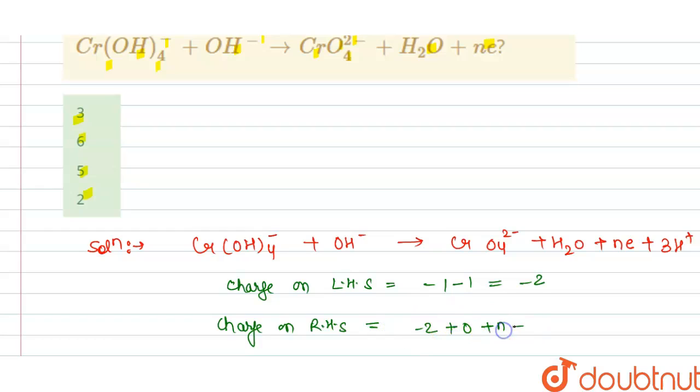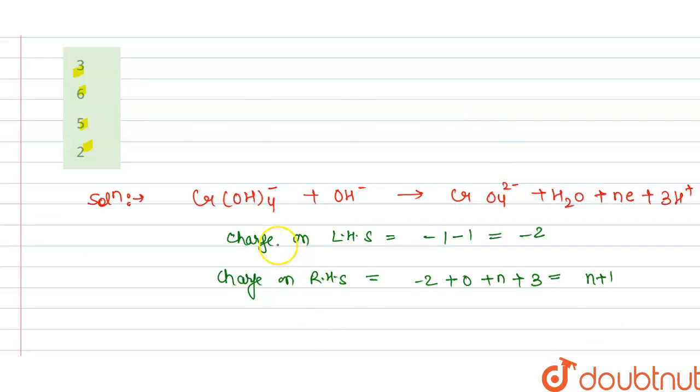...plus 0 plus n plus 3, so this is n + 1. If the equation is balanced, the reaction is balanced, then charge on left hand side must be equal to charge on right hand side.